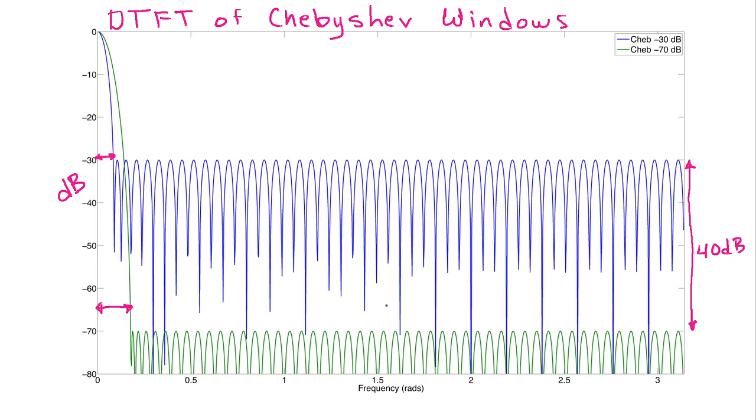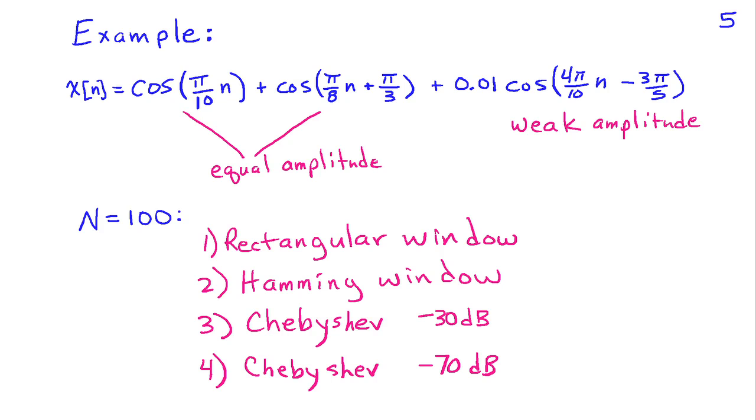So another way that sometimes we talk about windows and their DTFT is that they're somewhat like balloons, in that if you push them down in one place, they'll pop up somewhere else. So as you push the side lobes down, the main lobe has to generally get wider. And that occurs for most every type of window. So let's use these four windows in an example.